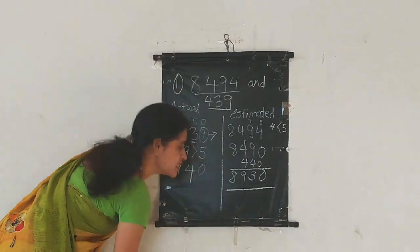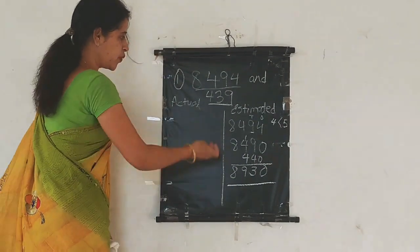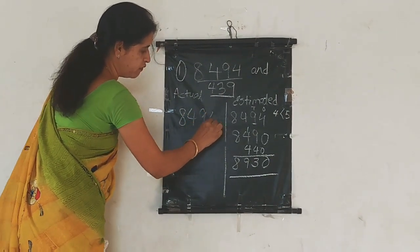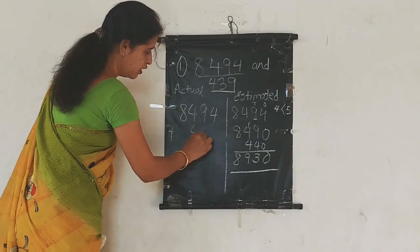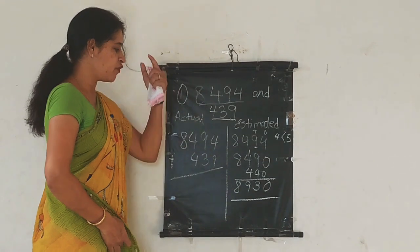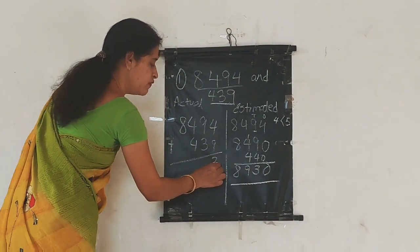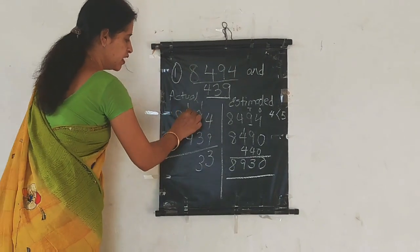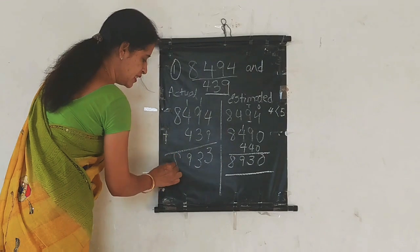Now let's find the actual sum. The actual question was 8,494 plus 439. Let's do it: 4 plus 9 is 13, write 3 carry 1; 9 plus 3 plus 1 is 13, write 3 carry 1; 4 plus 4 plus 1 is 9; 8 plus 0 is 8. So the actual sum is 8,933.